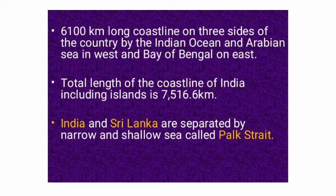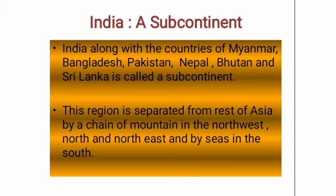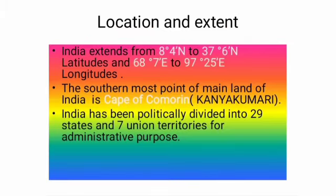India and Sri Lanka are separated by a narrow and shallow sea called Palk Strait. India along with the countries of Myanmar, Bangladesh, Pakistan, Nepal, Bhutan and Sri Lanka is called a subcontinent. This region is separated from the rest of Asia by a chain of mountains in the north-west, north and north-east, and by the sea in the south. This region also possesses distinct continental features in physiography, climate, natural vegetation, minerals, human resources, etc. Hence, India is known as a subcontinent.